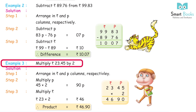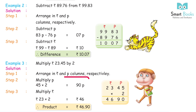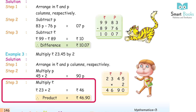Example 3: multiply Rs. 23.45 by 2. Step 1: arrange in rupees and paise columns. Step 2: multiply paise — 45 × 2 = 90 paise. Step 3: multiply rupees — Rs. 23 × 2 = Rs. 46. Product = Rs. 46.90.